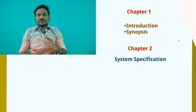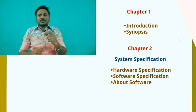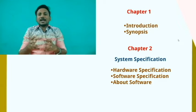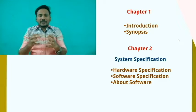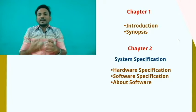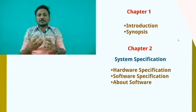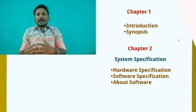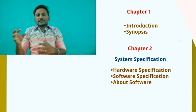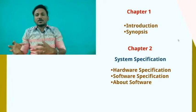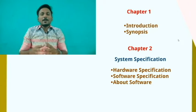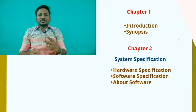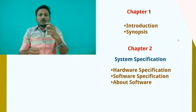Your second chapter is System Specification, where you have to represent three concepts. The first one is Hardware Specification — for your project development, what laptop, what processor, what RAM, and what hard disk you used. If it is an IoT project, the sensors and all those things should be represented in the hardware specification.